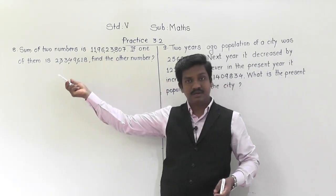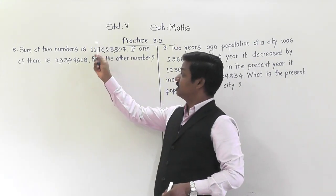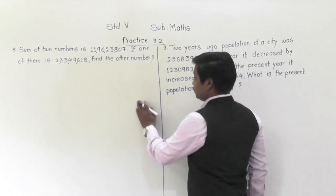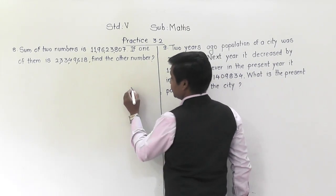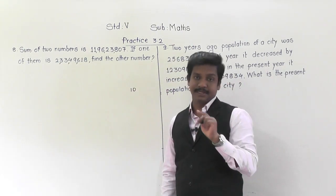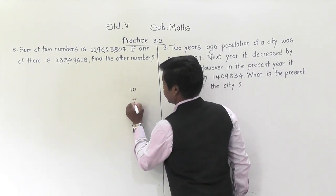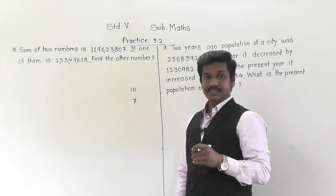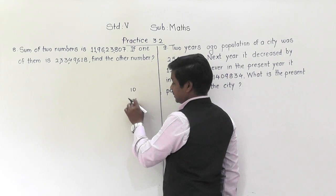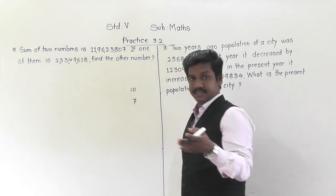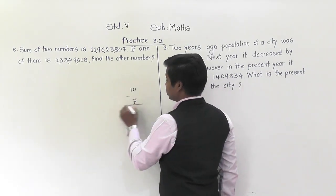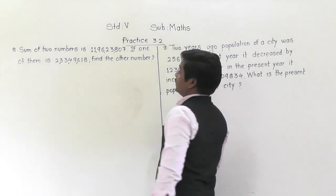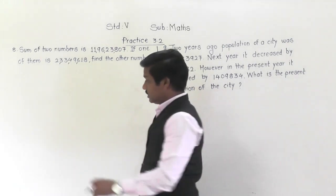To find the second number, which operation do we need? Let me give a parallel example: suppose the sum of two numbers is ten and one of the numbers is seven. Which two numbers add up to ten? Seven plus three. So to find three, we subtract: ten minus seven equals three. Similarly here, from the sum we need to subtract the one given number to find the other number.